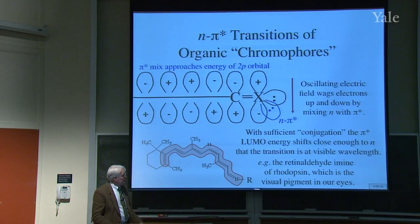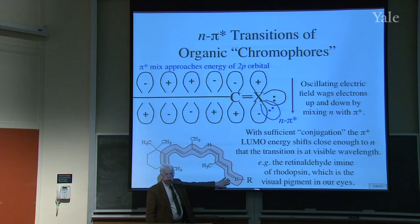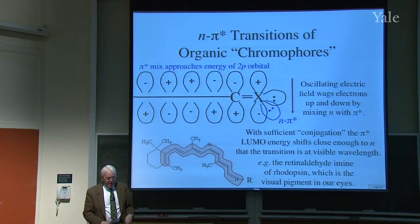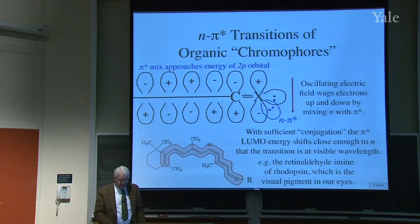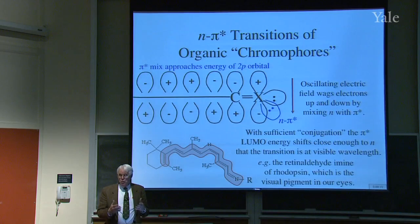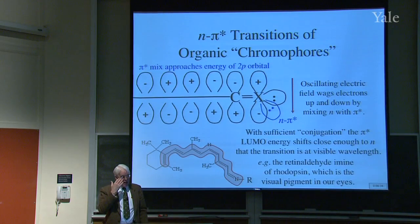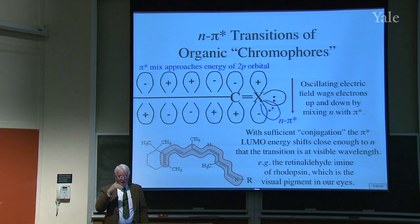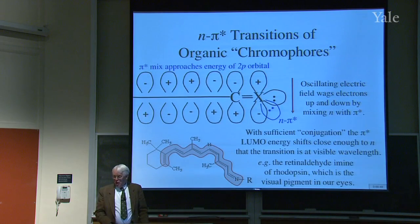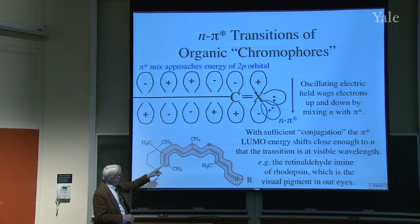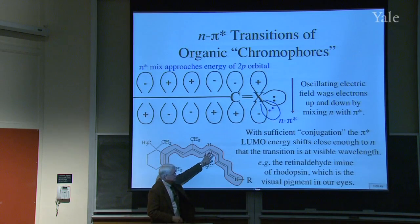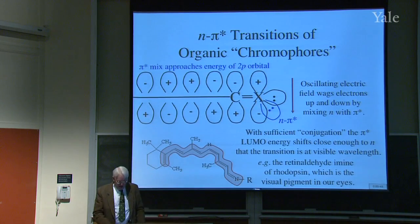For example, this molecule has an unshared pair on nitrogen that can mix with the π* of a really long conjugated system — that's the imine of retinaldehyde, which is what's in rhodopsin, the light-sensitive molecule in your eye. When light comes in, it excites this n→π* transition, and it triggers a signal to your brain because the cis isomer changes to the trans isomer at this double bond. That's how you see.